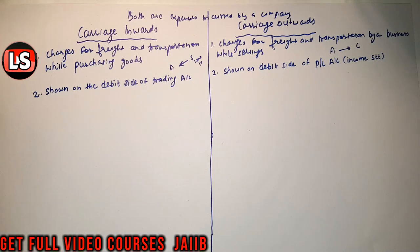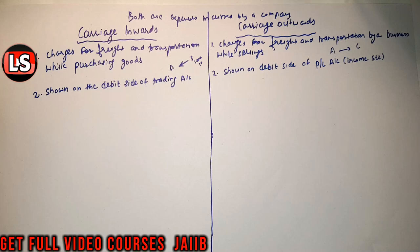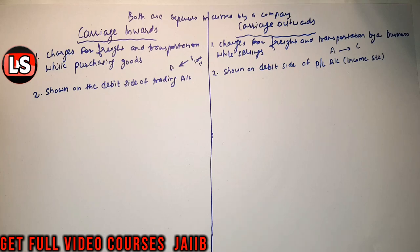The second difference is that carriage inward is shown on the debit side of the trading account, whereas carriage outward is shown on the debit side of the profit and loss account. To understand this: the trading account basically indicates the trading activities — results of sales and purchases of products — what result we get from our trading activities.